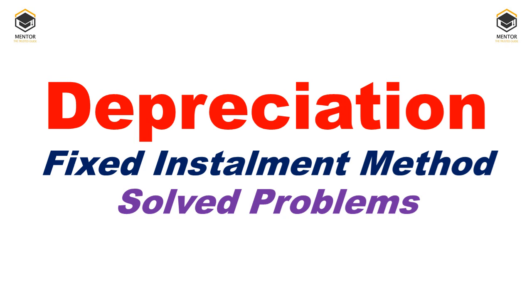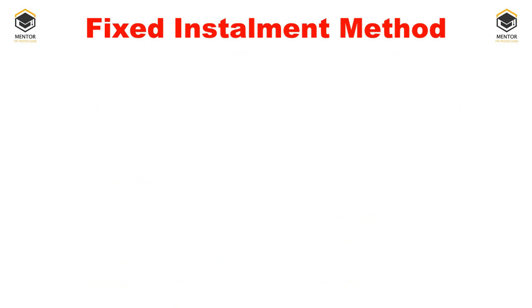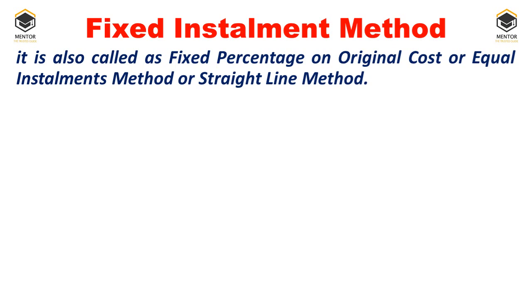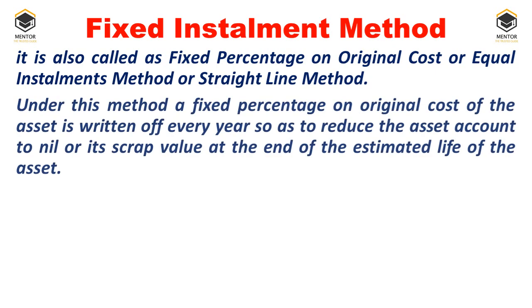Hello students. In this video I will explain depreciation fixed installment method — the concept as well as solved problems. Fixed installment method is one of the most important methods of depreciation. It is also called fixed percentage on original cost, equal installment method, or straight line method. Under this method, a fixed percentage of the original cost of the asset is written off every year.